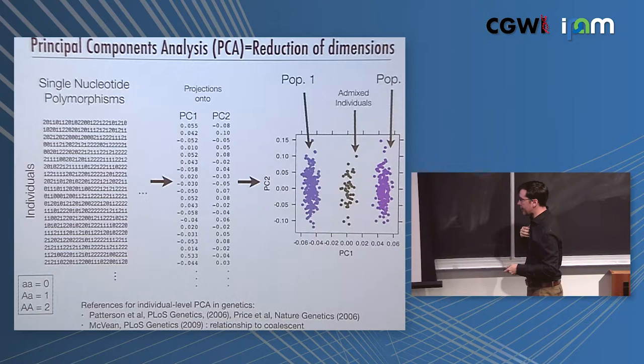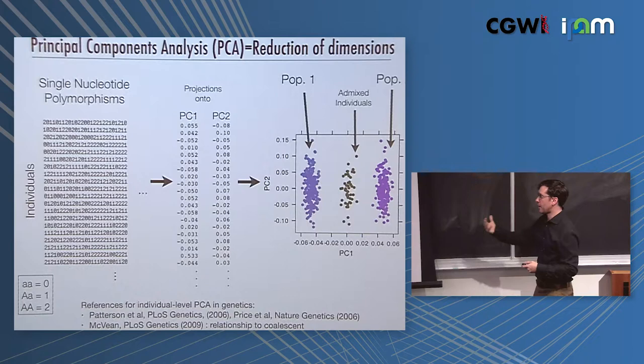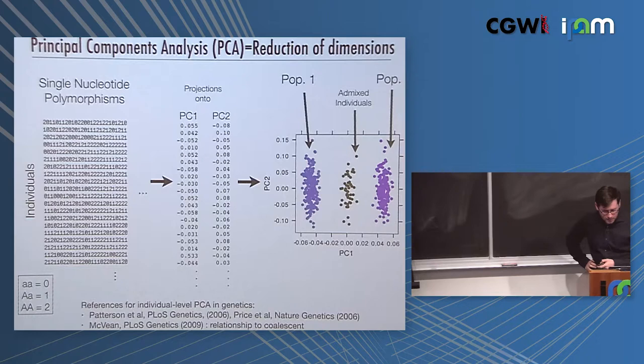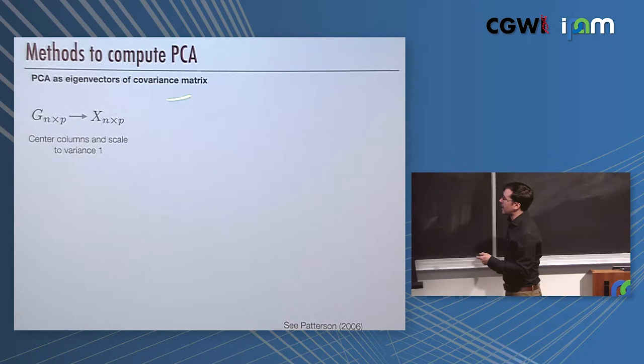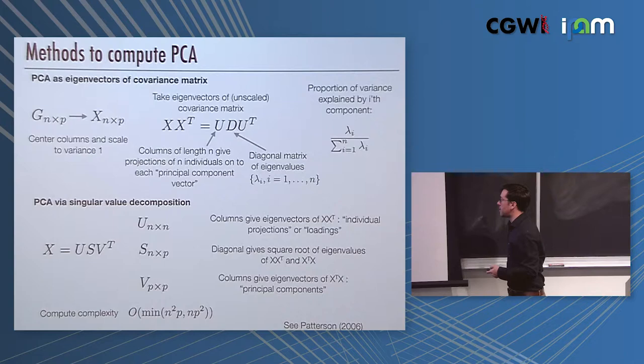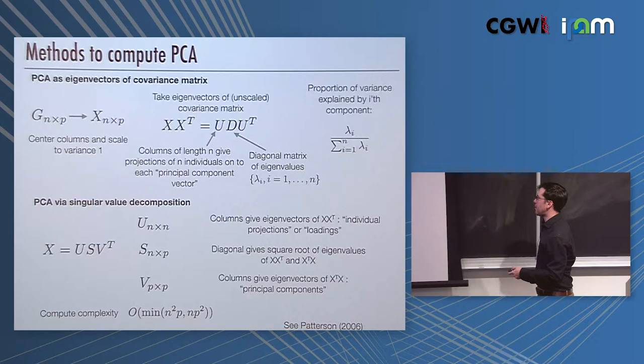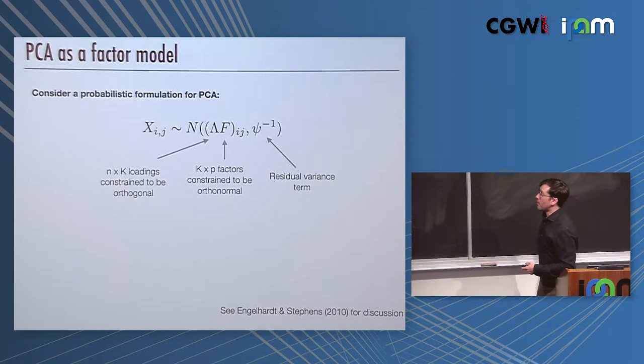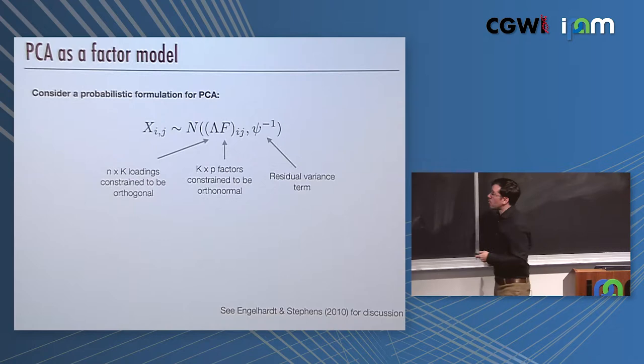There are different methods to compute PCA. One is using eigenvectors of the covariance matrix. You can also get the PCA doing singular value decomposition. Here in the singular value decomposition, the matrix U that's n by n gives the projections or loadings of the individuals, and V gives the actual definitions of the principal components, and S is giving the eigenvalues. There's a probabilistic formulation of PCA where the XIJ, the genotype matrix in our case, is multivariate normal with a mean that is given by the IJth element of this product of matrices with a residual variance term.